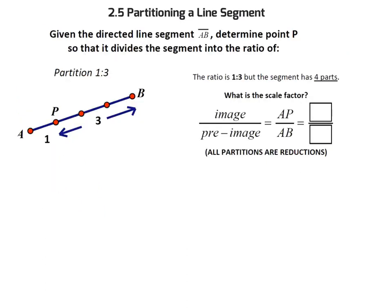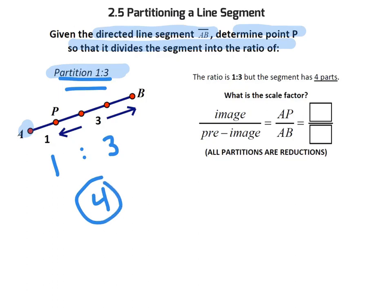In this case, we have a directed line segment AB, meaning A is the center of dilation. They would like us to put point P on that segment so that it divides it into a ratio of 1 to 3. What that ultimately means is there will be 4 parts — 1 part and then 3 parts. That's what we mean by 1 to 3: 4 total parts.